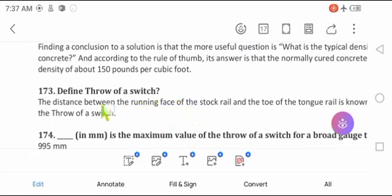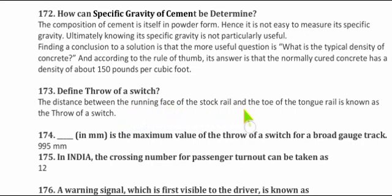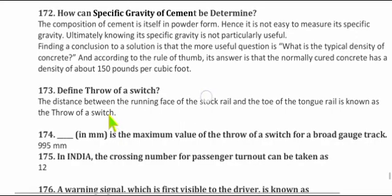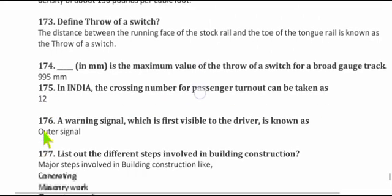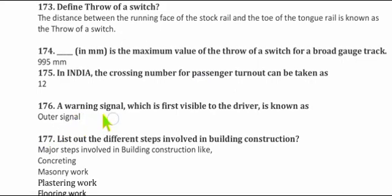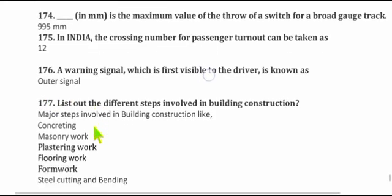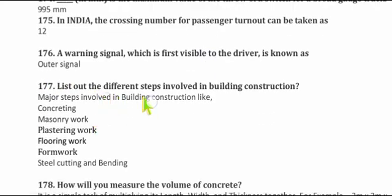Question 173: Define the throw of a switch. The distance between the running face of the stock rail and the toe of the tongue rail is known as the throw of a switch. Question 174: In millimeters, the maximum value of the crossing angle for a broad gauge track is 995 mm. Question 175: In India, the crossing number for passenger turnouts is used per standard specification. Question 176: A warning signal that is first visible to the driver is known as the outer signal.